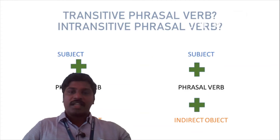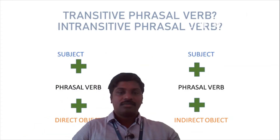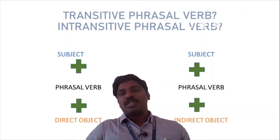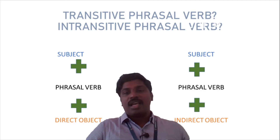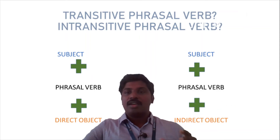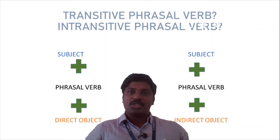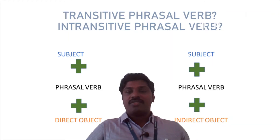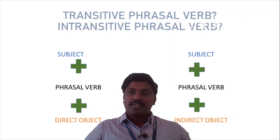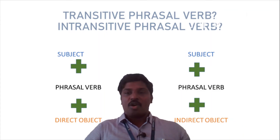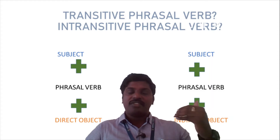Now let us move on to the next slide. A phrasal verb has four types. We are looking at two types at a time. The first set is transitive phrasal verb and intransitive phrasal verb. Both of them have a subject and an object with the phrasal verb in the middle.